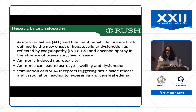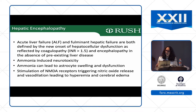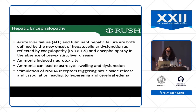Just a few slides on hepatic encephalopathy. Acute liver failure and fulminant hepatic failure are both defined by new onset of hepatocellular dysfunction reflected by a coagulopathy — an INR greater than 1.5 — and an encephalopathy in the absence of pre-existing liver disease. What it really comes down to is ammonia-induced neurotoxicity, because it leads to astrocyte swelling and dysfunction.